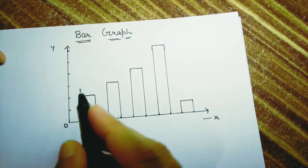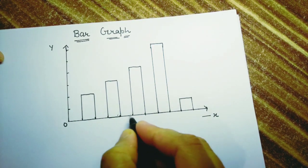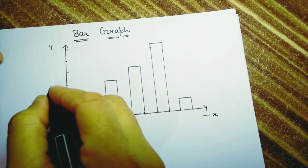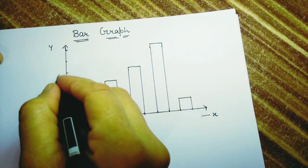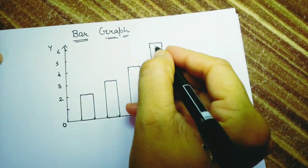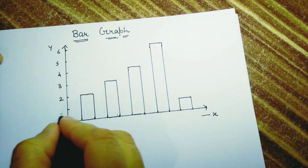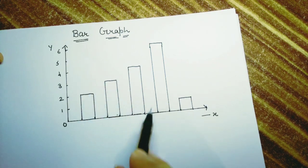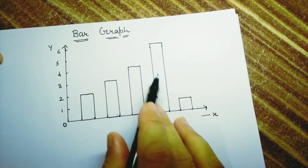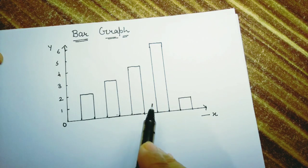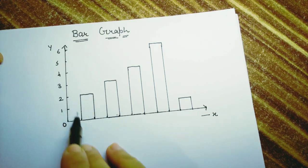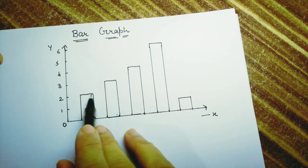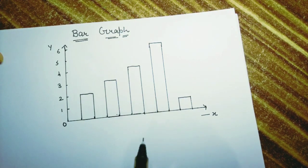Have you observed here — the width between the rectangles is the same but the height is different. Here the height is 2 centimeters, then 3 centimeters, next is 4, then 5 centimeters, and the last one is 1 centimeter. So the bar graph is a pictorial representation using bars which are rectangles having the same width but different heights.